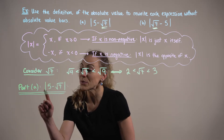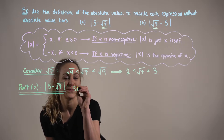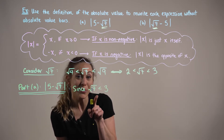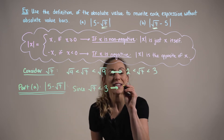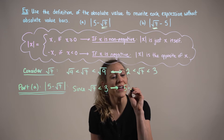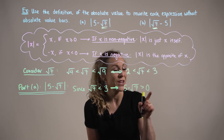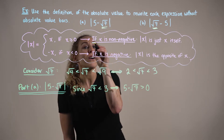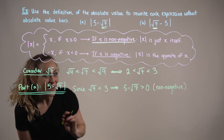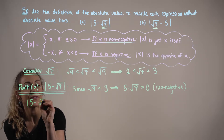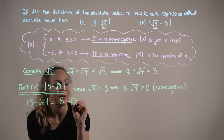In part A, we want to rewrite the absolute value of 5 minus the square root of 7 without the absolute value bars. Since the square root of 7 is less than 3, then 5 minus the square root of 7 is going to be a positive value, because 5 minus 3 is positive. So the value within the absolute value expression is non-negative, which means the absolute value of 5 minus the square root of 7 is simply equal to 5 minus the square root of 7 itself.